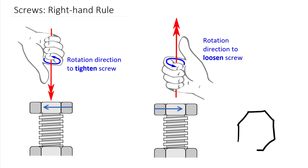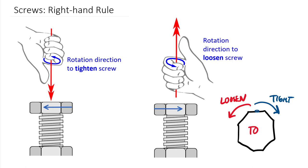Righty-tighty lefty-loosey applies when you're looking at the head of a screw or bolt — looking in this direction. If you turn that screw to the right when looking at the top, that tightens the screw, and the opposite direction loosens it. So if you wrap your fingers in the direction of loosen, wrapping them in the direction of that arrowhead, your thumb should come out of the screen — your thumb shows the direction of motion of that screw or bolt.